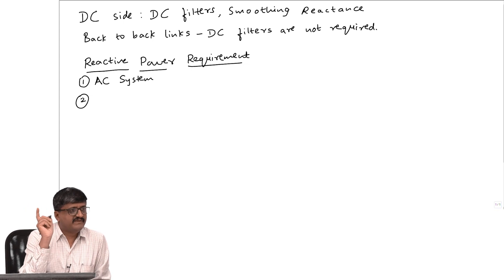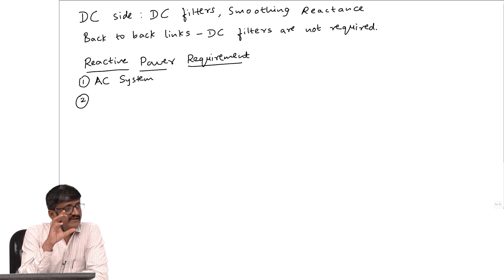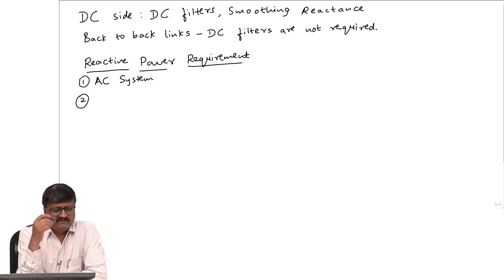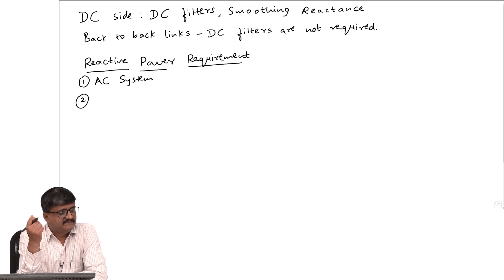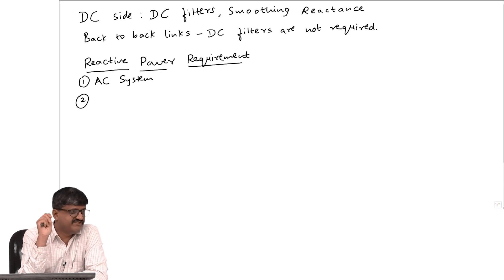Invariably there are filters on the AC side to minimize the current harmonics. These filters can provide reactive power at the fundamental frequency. When we decided the rating of the capacitor or inductor, we took the fundamental current and the harmonic current. That fundamental current is essentially supplying reactive power. The inductor and capacitor act in opposite ways: by convention, the inductor absorbs reactive power and the capacitor generates reactive power.